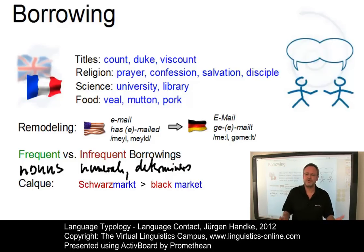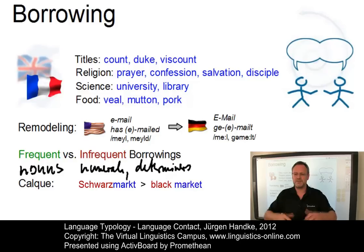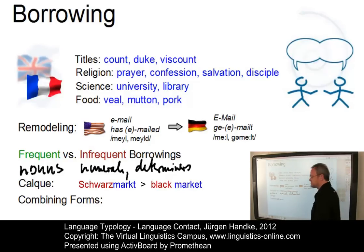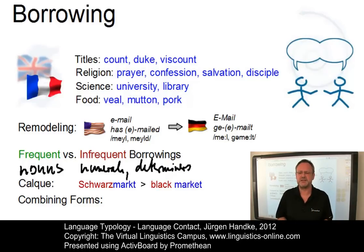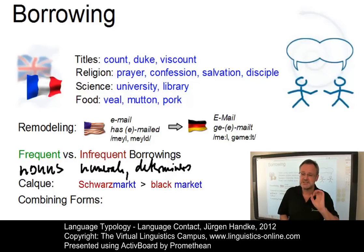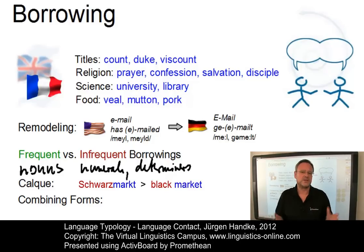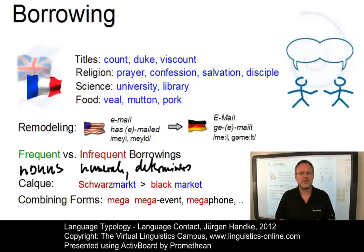A further way of exploiting foreign languages extracts morphemes from their vocabularies and imports them into the recipient language, where they serve as building blocks for new words. These building blocks are called combining forms. English makes use of this strategy on a massive scale to create scientific and technical terms from Greek and Latin. Some combining forms have become so familiar that speakers attach them to a wide range of items, including native English words — take the prefix mega- as an example, giving mega-event, mega-phone, mega-star, which are now common present-day English words.